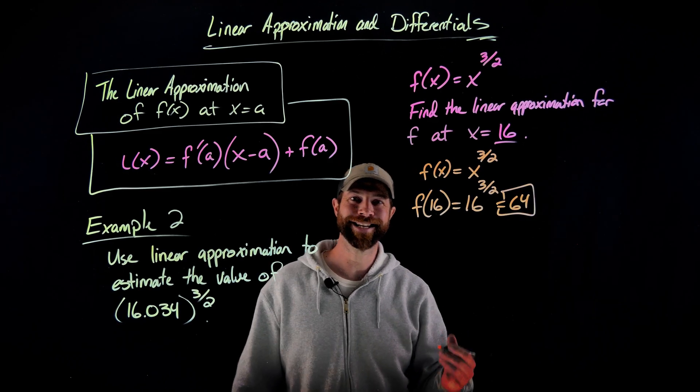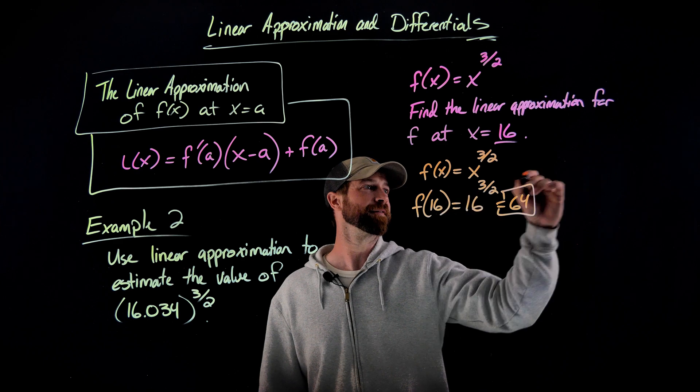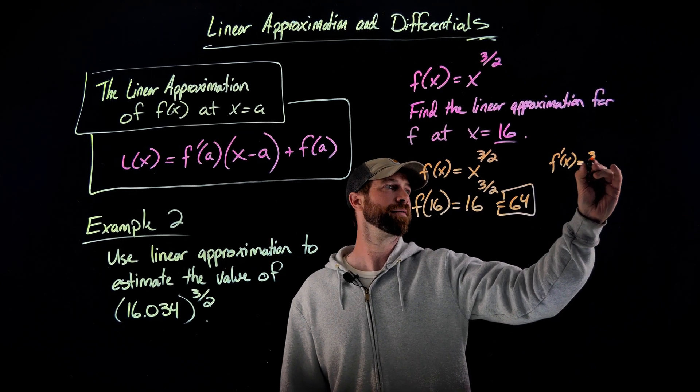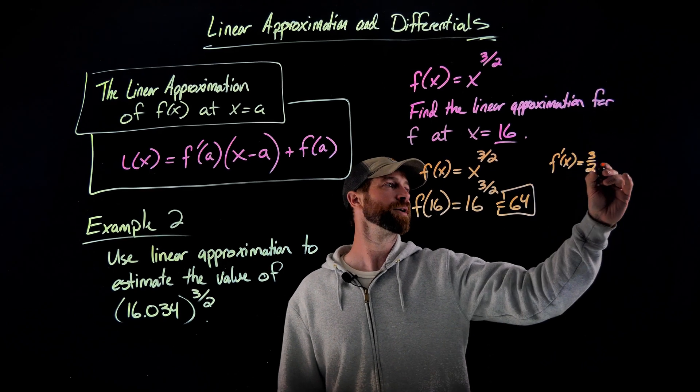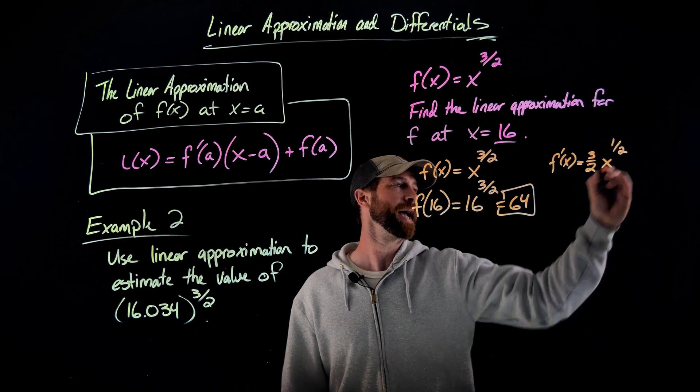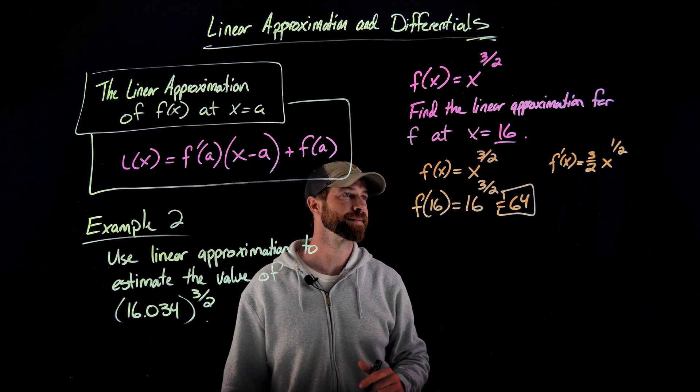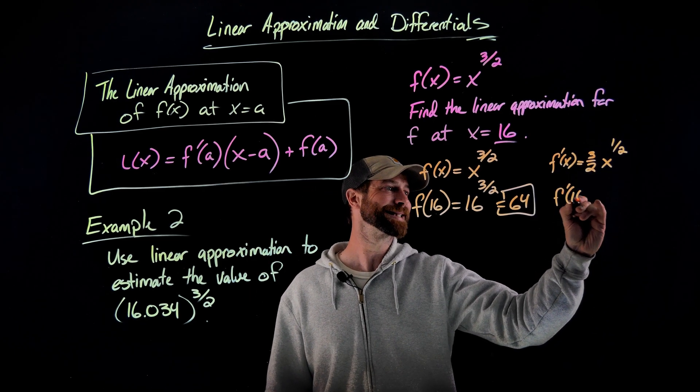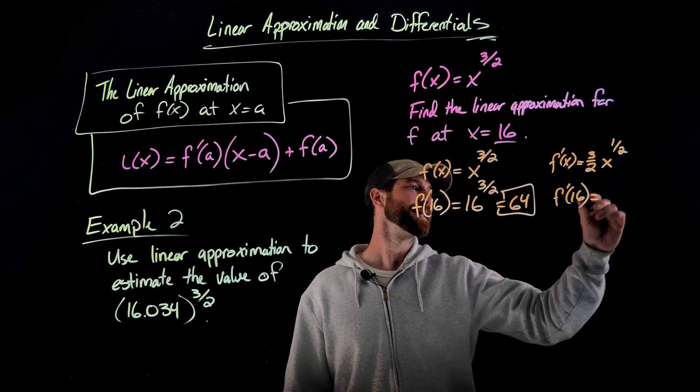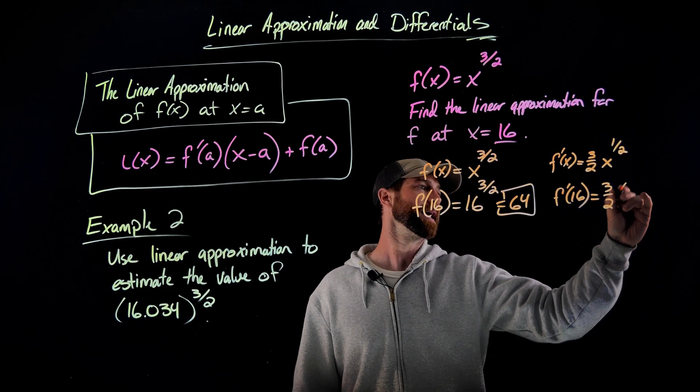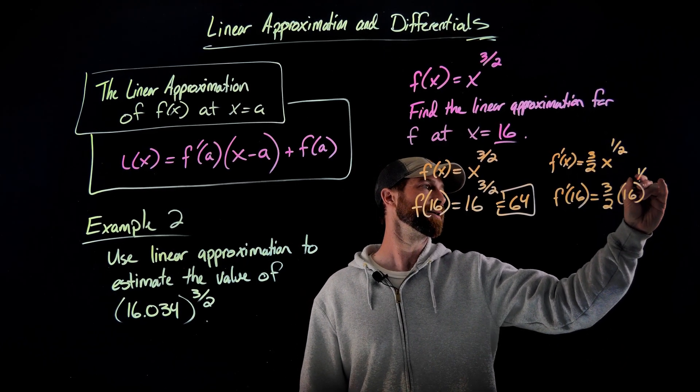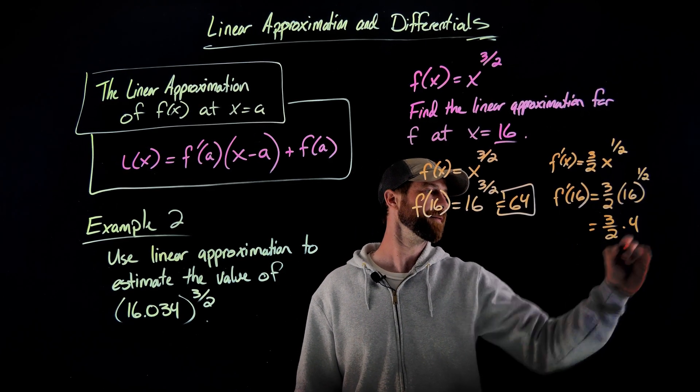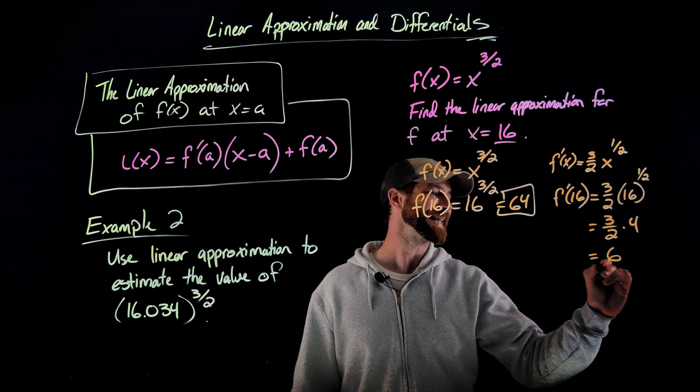The next thing we need to do is find our derivative of f of x, f prime of x in this case. We just use the power rule here, bring the three halves down front, subtract 1 away from this to get x to the 1 half, or the square root of x. Then we need to evaluate f prime of x at 16. In this case, that would be three halves times the square root of 16, or 16 to the one half, or this becomes three halves times four, which is six.